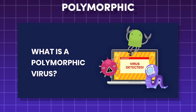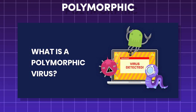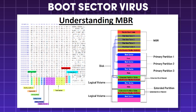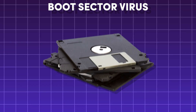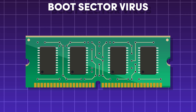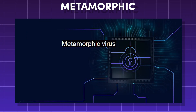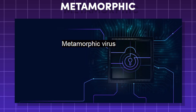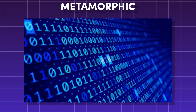A polymorphic virus is a tricky virus that can change its code when it infects a new system, making it difficult to fight. A boot sector virus infects the master boot record of the hard drive or boot sector of a floppy disk, and loads into memory before the operating system starts. A metamorphic virus is even more advanced, as it can completely rewrite itself with each iteration.